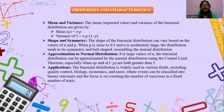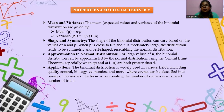Properties and characteristics. Mean and variance: the mean (expected value) and variance of the binomial distribution are given by: mean μ = N × P; variance σ² = N × P × (1−P); and standard deviation = √(N × P × Q) = √(N × P × (1−P)). Regarding shape and symmetry: the shape of the binomial distribution can vary based on the values of N and P. Where P is close to 0.5 and N is moderately large, the distribution tends to be symmetric and bell-shaped, resembling the normal distribution.